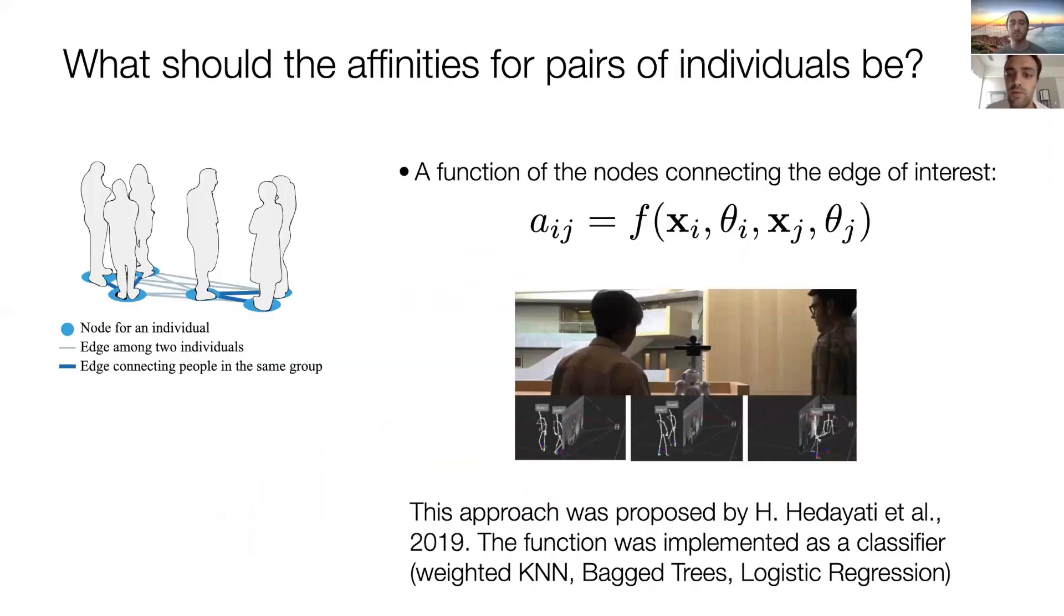The key step in this pipeline is calculating affinities between participants. Prior work calculates affinities as a function of the position and orientation of the nodes connected by the edge. This is either via heuristics, or more recently, through data-driven techniques.